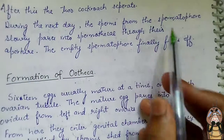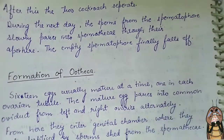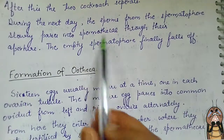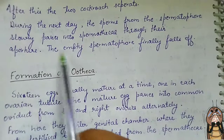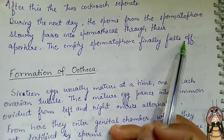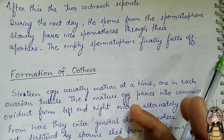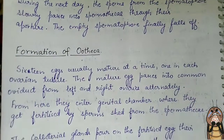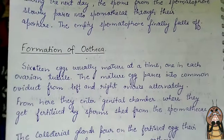After the sperms have passed through the spermathecal aperture into the spermatheca, the empty spermatophore finally falls off. All of the sperms are then stored inside the spermatheca.